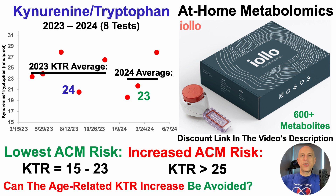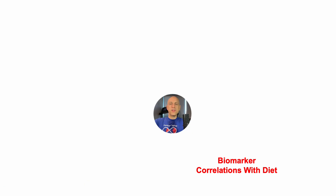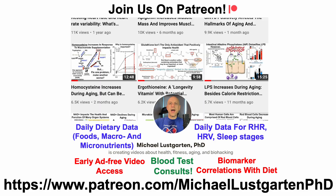Can the age-related kynurenine to tryptophan ratio increase be avoided? At this point in the video, I usually post correlations with diet as a first-pass strategy to improve biomarkers, and that data is currently on Patreon. I should mention that nothing was significantly correlated with the KTR — including macros, micros, and foods — following test number eight. I sent the sample for analysis on Monday, so after those results come in about three weeks, I'll recalculate correlations and post them on Patreon in the correlations tier.